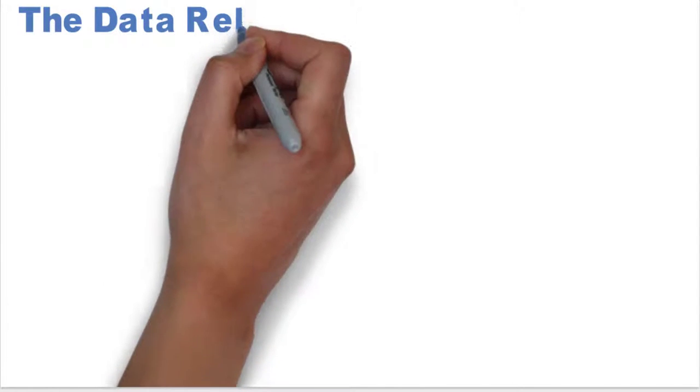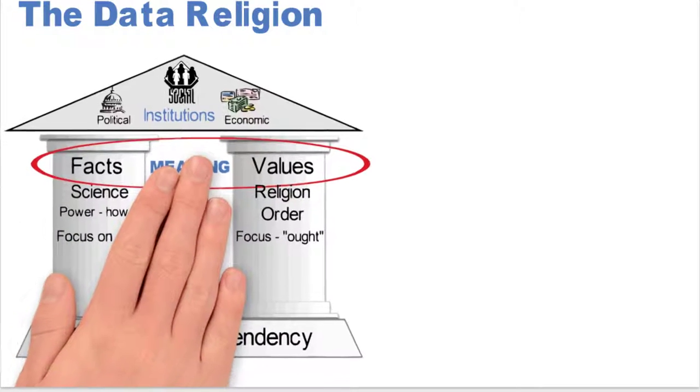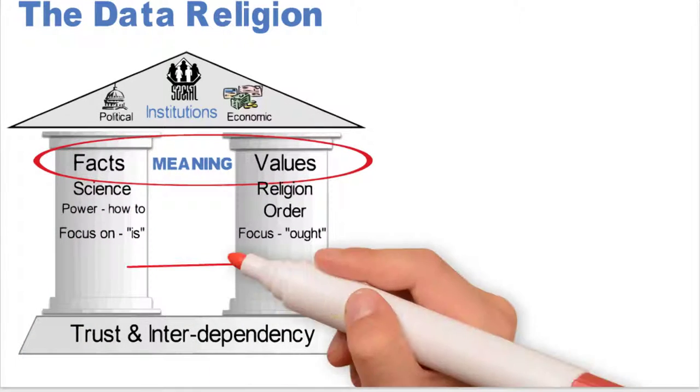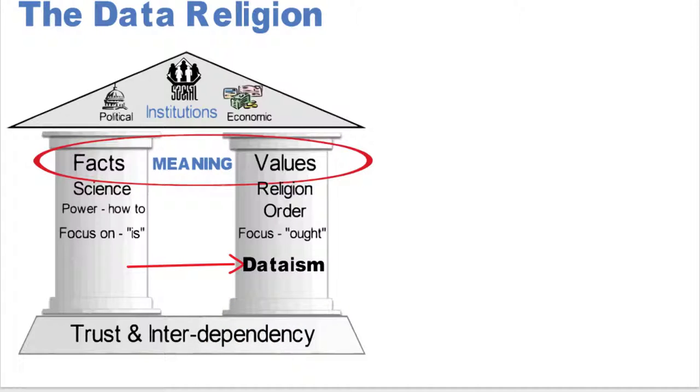We're now going to do the last part of Homo Deus, which is the data religion section. Let's look at our pillar of facts, meaning, and values. What we're basically saying is dataism—Harari puts that underneath the religion.